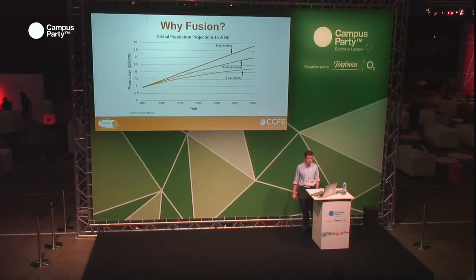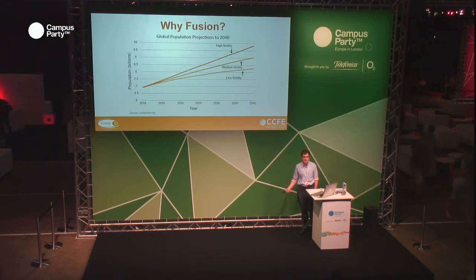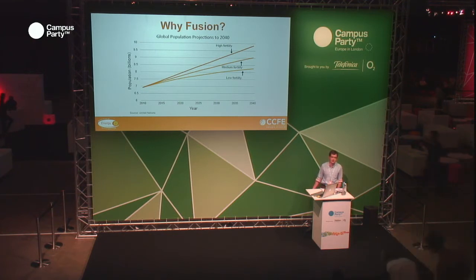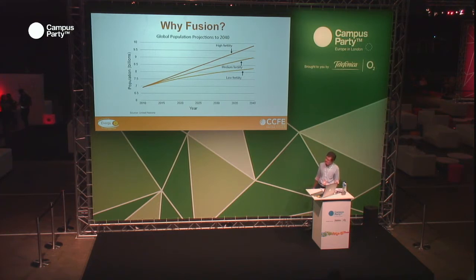We have a constantly growing population. Based on UN data, if we have a continuing medium level of fertility, it's quite likely that by about 2040 we're going to have about 9 billion people on Earth. Because of this, we're using more and more energy, especially as more people are living longer due to advances in medical care, and more people are having a higher quality of life. The basic unit of currency for a higher quality of life is energy.